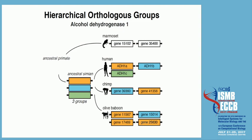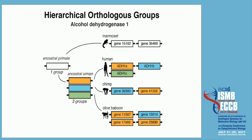That defines three groups. Once we've done this inference, we can go back to the leaves and infer gains and losses. That way we've characterized these genes in terms of the ancestral simian. We can go a bit deeper and think about the ancestral primate — there we have one group, so all of these genes descended from one ancestral gene. We still have to do the inference, but basically we managed to capture all of these relationships.